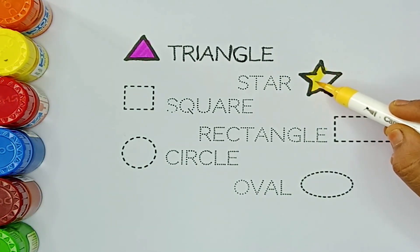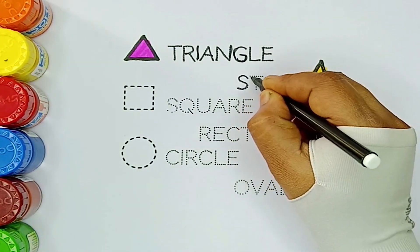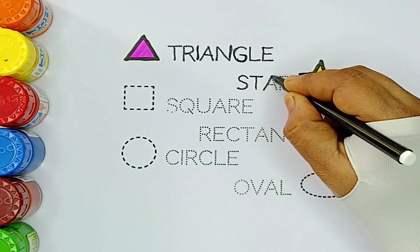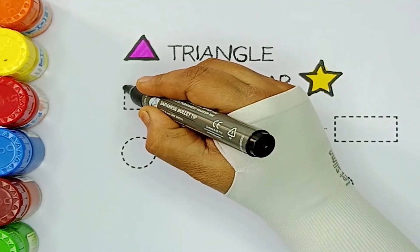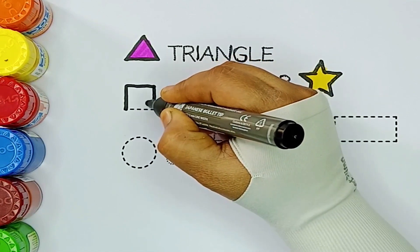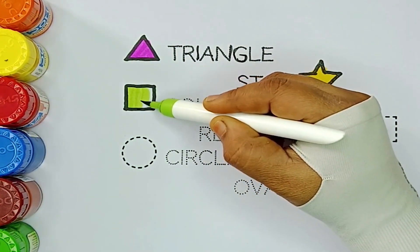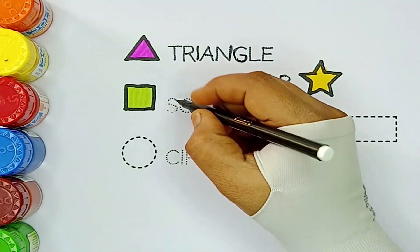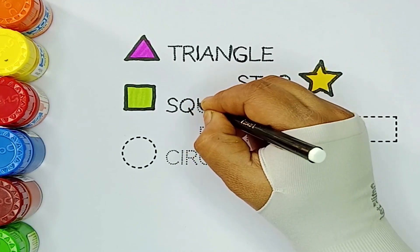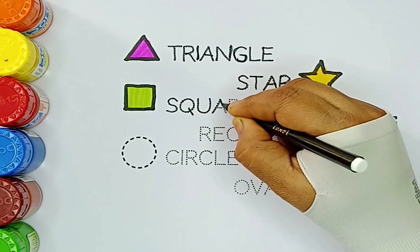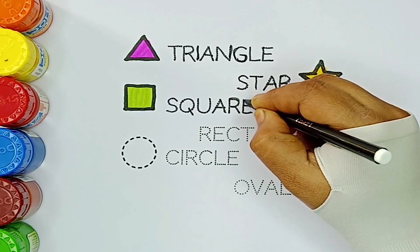Yellow color. S-T-A-R. Star. Square. Green color. S-Q-U-A-R-E. Square.